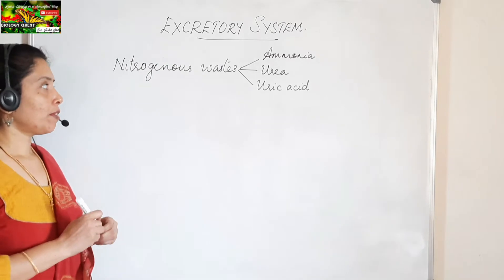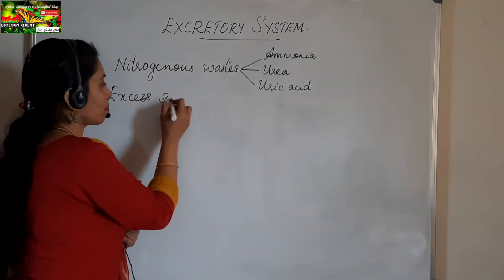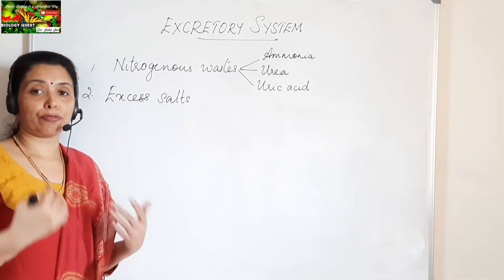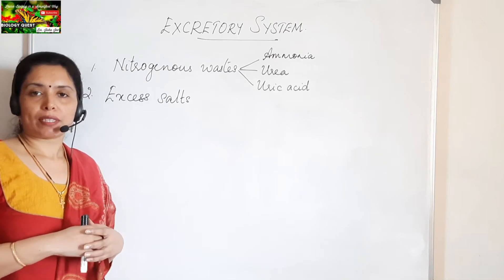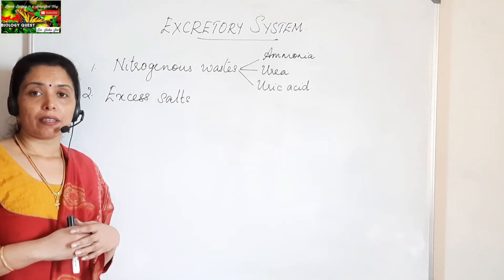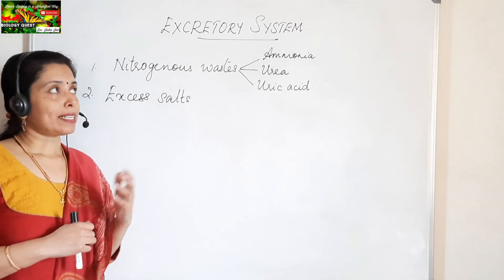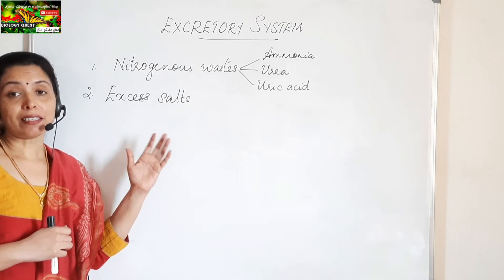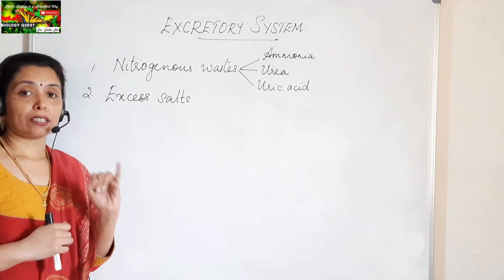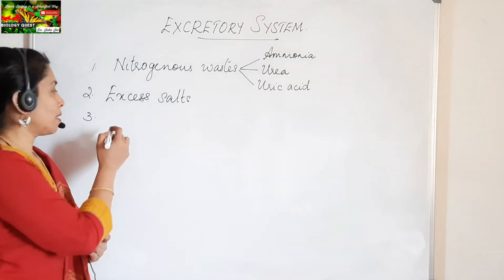The second type of excretory product is excess salts — for example, sodium chloride. We take in a lot of salt through our foods. Whatever is needed by the body is used up; the excess salts have to be removed. These excess salts are mostly removed through urine via the kidneys, and some of the excess salt may also be removed through sweat. Excess salts cannot be stored in the body; they must be removed either through urine or through sweat.